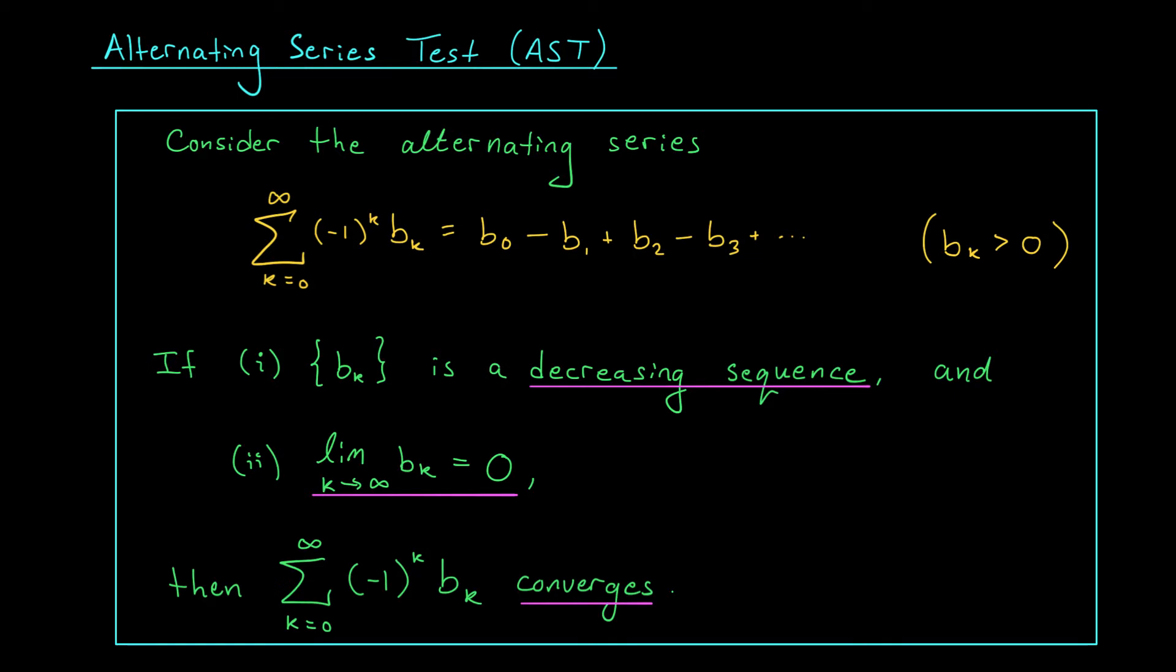It's the signs in front of them that make the series alternate. The test tells you that if the following two conditions are met, your alternating series will converge. The first condition is that the terms b0, b1, b2, and so on form a decreasing sequence. They get smaller and smaller and smaller. Really as long as the terms are eventually decreasing, that's good enough. Secondly, your terms should tend to zero. If both of these conditions are met, your series converges. And that's the whole test. As you'll see in the examples to follow, checking conditions one and two is usually pretty quick, which makes the alternating series test nice and easy to apply in practice.